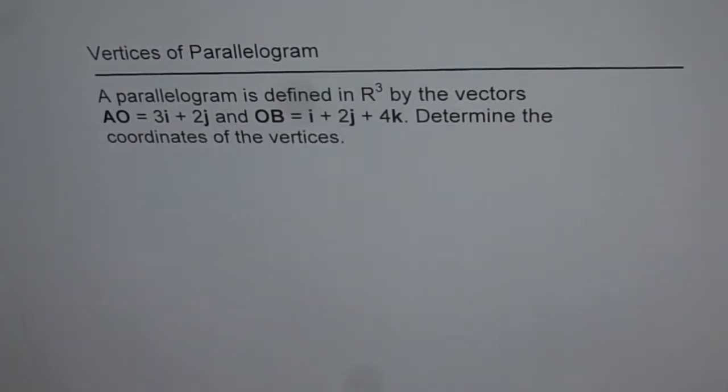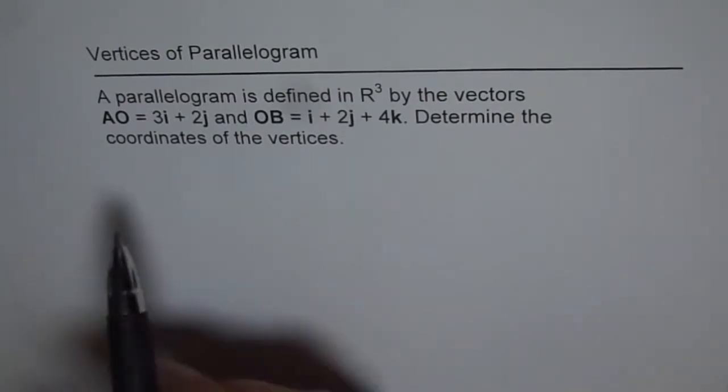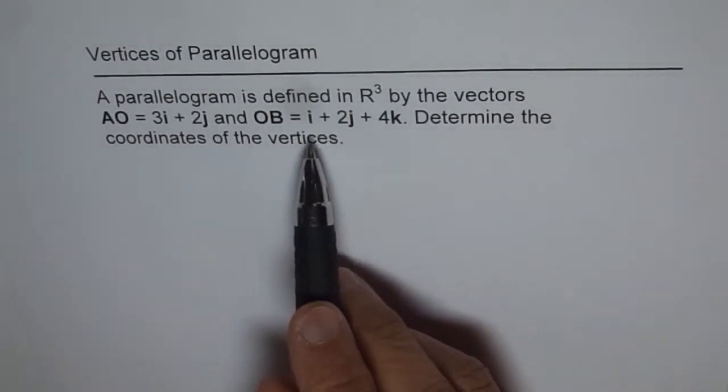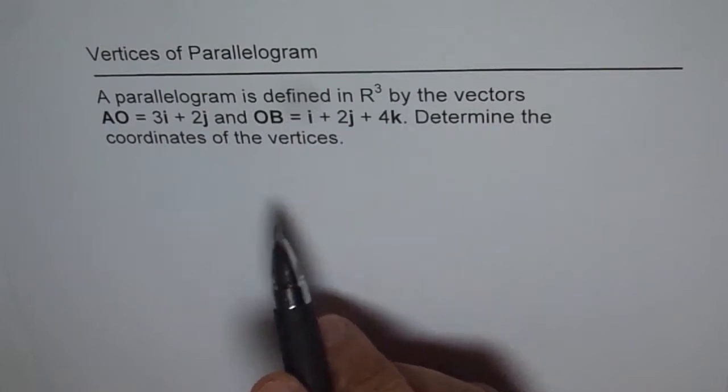Vertices of parallelogram. A parallelogram is defined in R³ by the vectors AO equals 3i + 2j and OB equals i + 2j + 4k. Determine the coordinates of the vertices.